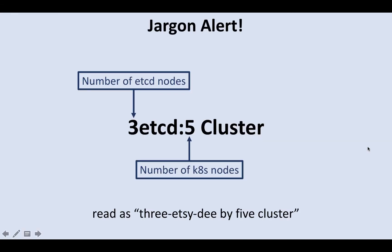Before that, some jargon. I'm going to be using this kind of notation. Read this as a three etcd by five cluster: three represents the number of etcd nodes, and five represents the number of Kubernetes nodes.